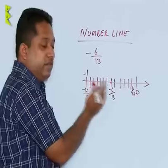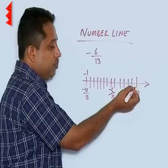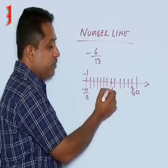So, between 0 and minus 1, we have divided this portion into 13 portions and the sixth part from 0, if you observe, will give you minus 6 by 13.